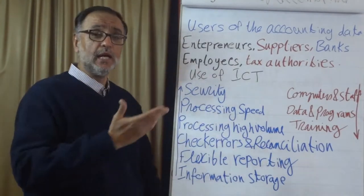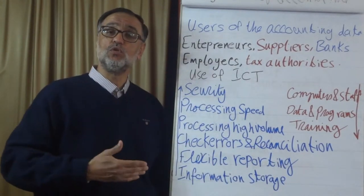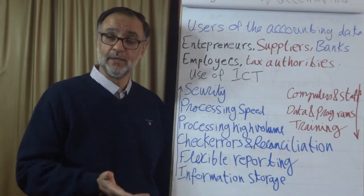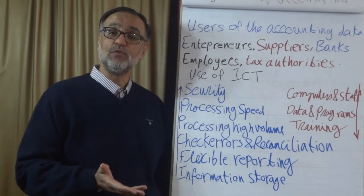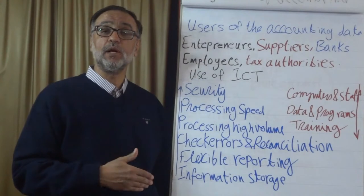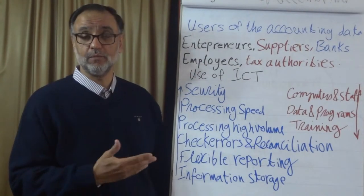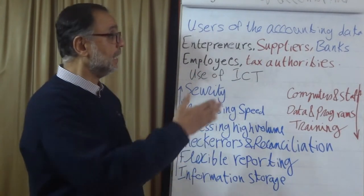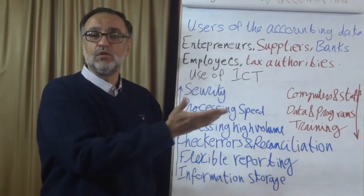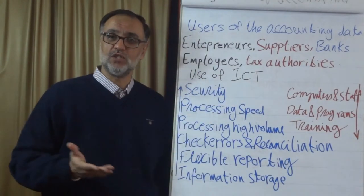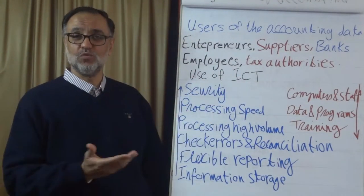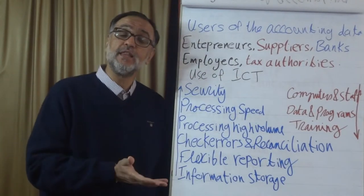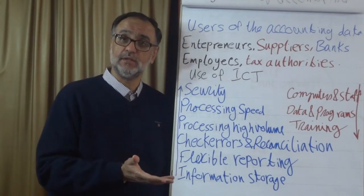Employees are also users of accounting information. If you are an employee in a business, you want to make sure the business is doing well so you have certainty about your future, and also to ensure you receive bonuses and salary increases. The last group is the tax authority — tax is waiting for any business that makes a profit so they can collect the appropriate tax.